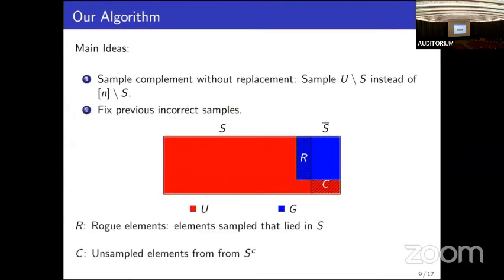We refer to the rogue elements — elements we have sampled so far that actually lie in S but we thought belonged to the complement. The red region elements are ones we haven't seen at all so far.